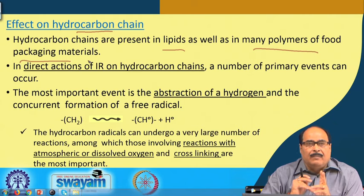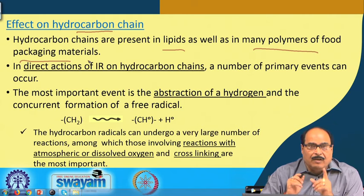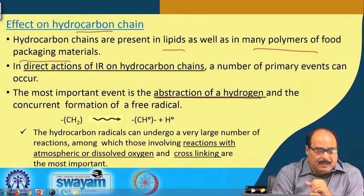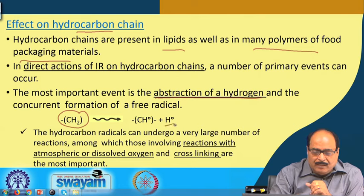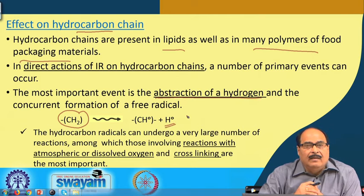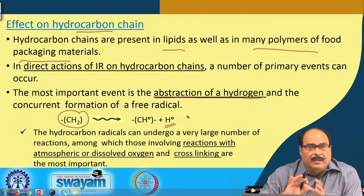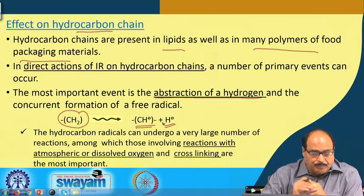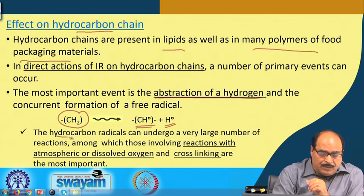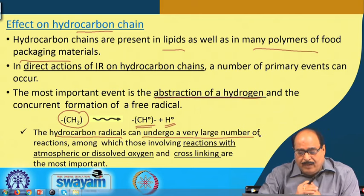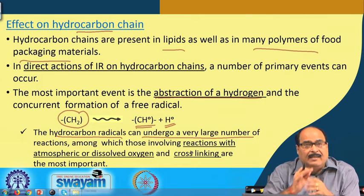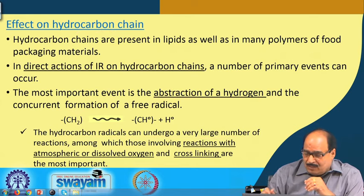A number of primary events can occur. The most important event is the abstraction of hydrogen from the hydrocarbon — a hydrogen free radical is extracted, forming a hydrocarbon free radical. This hydrocarbon free radical can then undergo a large number of reactions, among which those involving atmospheric or dissolved oxygen and cross-linking reactions are particularly important.